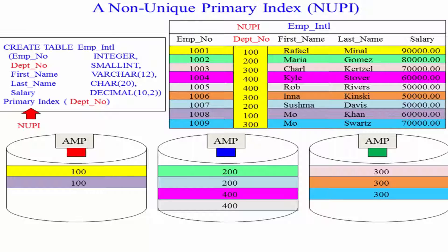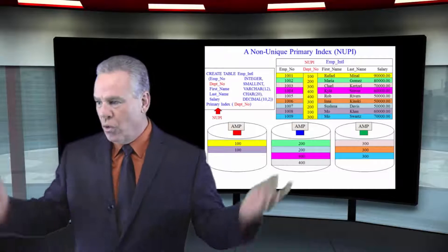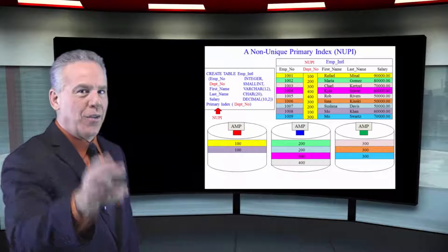All like values, when hashed by the same formula, are going to the same place. So you will get uneven distribution with your non-unique primary index. So why use it?